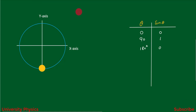After some more time the particle reaches the bottom, where the angle is 270°, and sin 270° = −1. Finally the particle returns to its original position, where the angle is 360°, and sin 360° = 0. The particle has completed one revolution, and sine θ has repeated its value — at the first position it was 0 and after one revolution it is again 0.